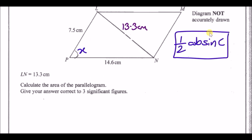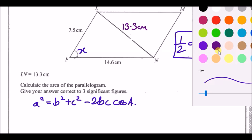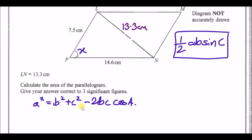The cosine rule formula is a² = b² + c² − 2bc cos A. Always label the diagram appropriately when using this: b and c are the two side lengths, capital A is the known angle, and the opposite side is little a — which is 13.3.